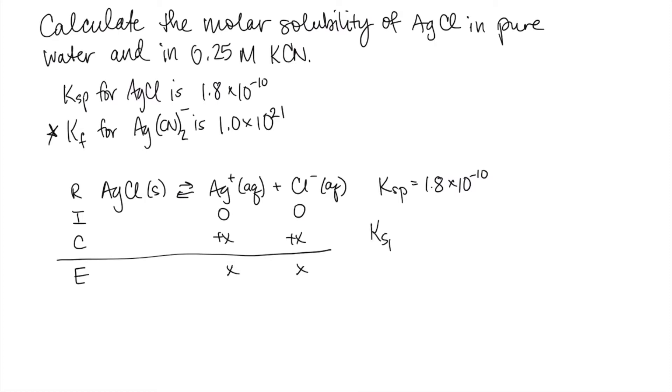If we write our expression for Ksp, it's the concentration of silver ions times the concentration of chloride ions. So we end up with 1.8 times 10 to the minus 10, which is our Ksp, equals x squared. And x is going to be 1.3 times 10 to the minus 5. So that's our molar solubility of AgCl in pure water.